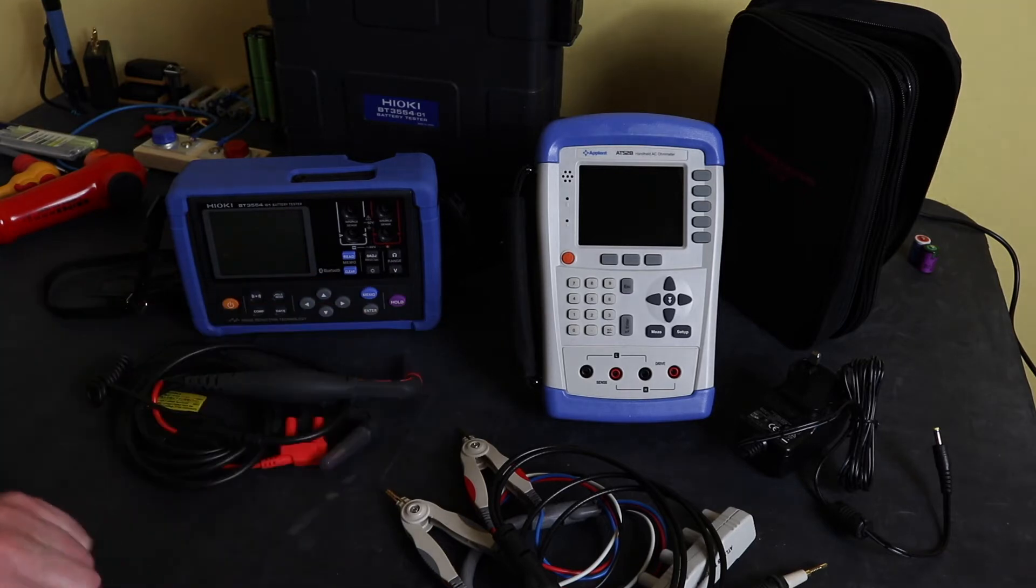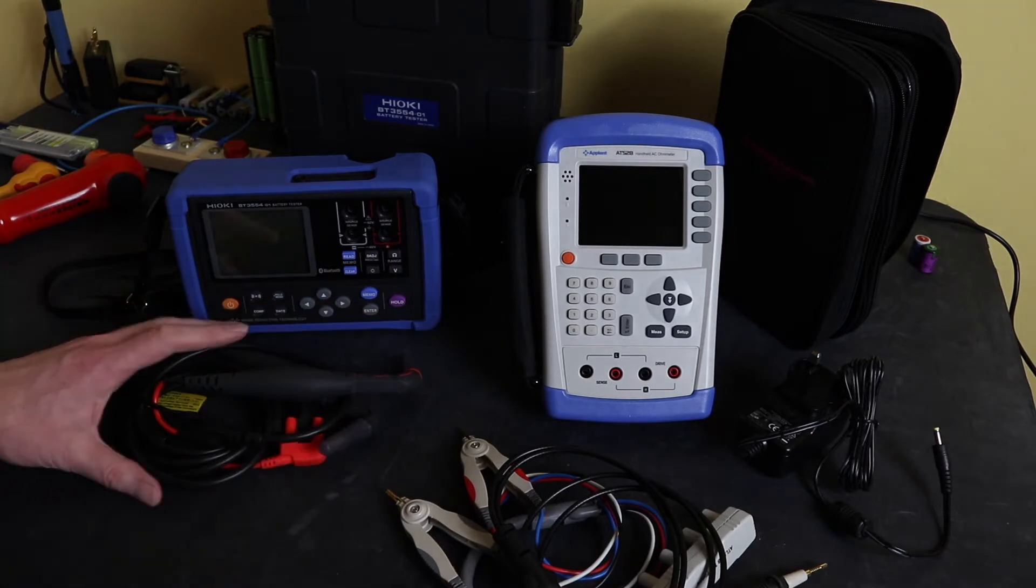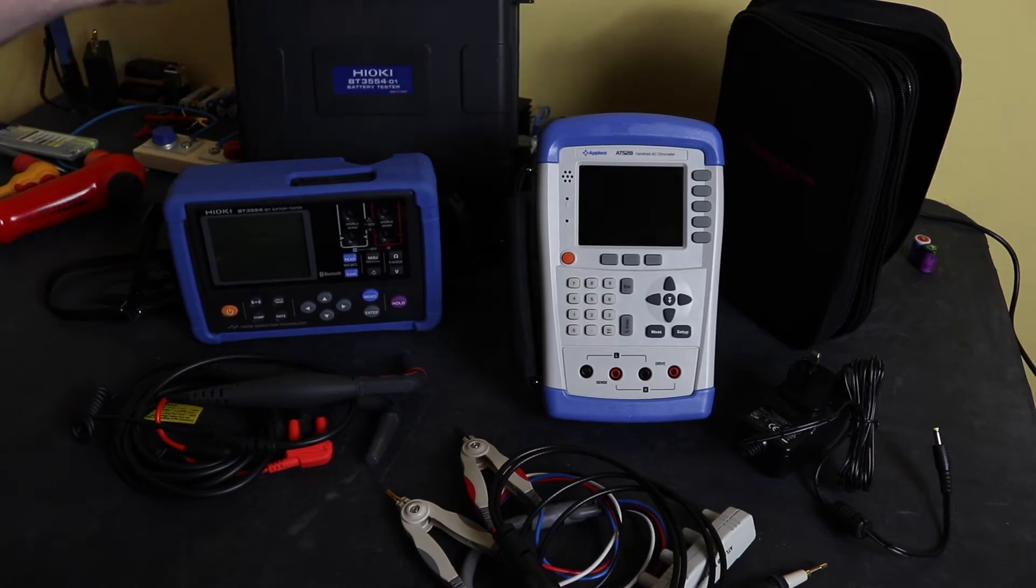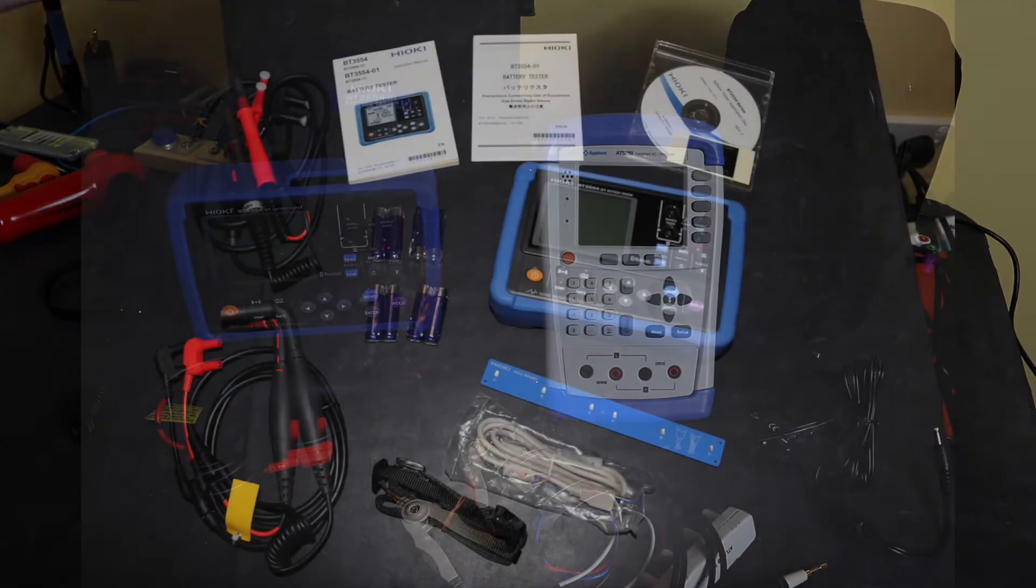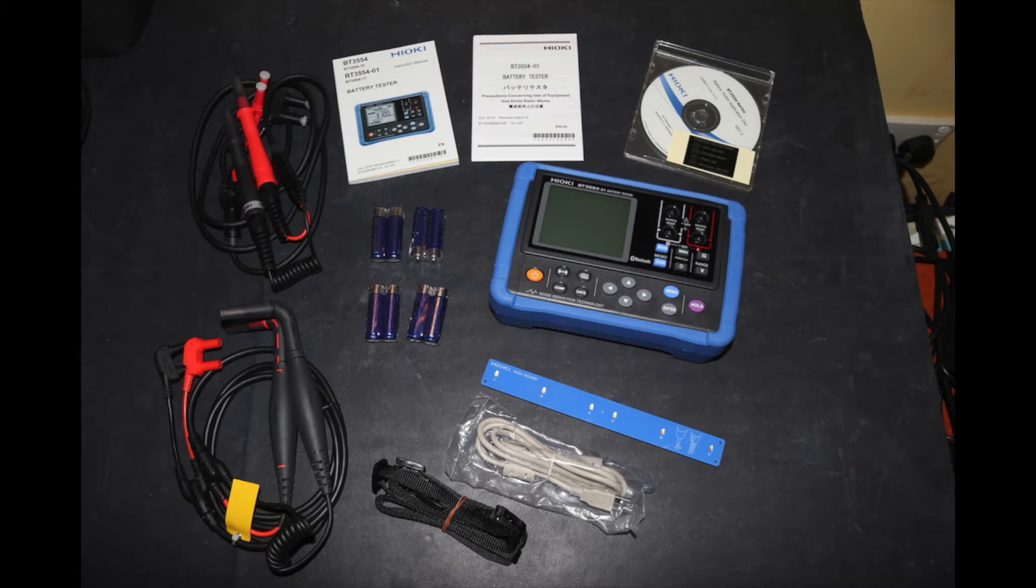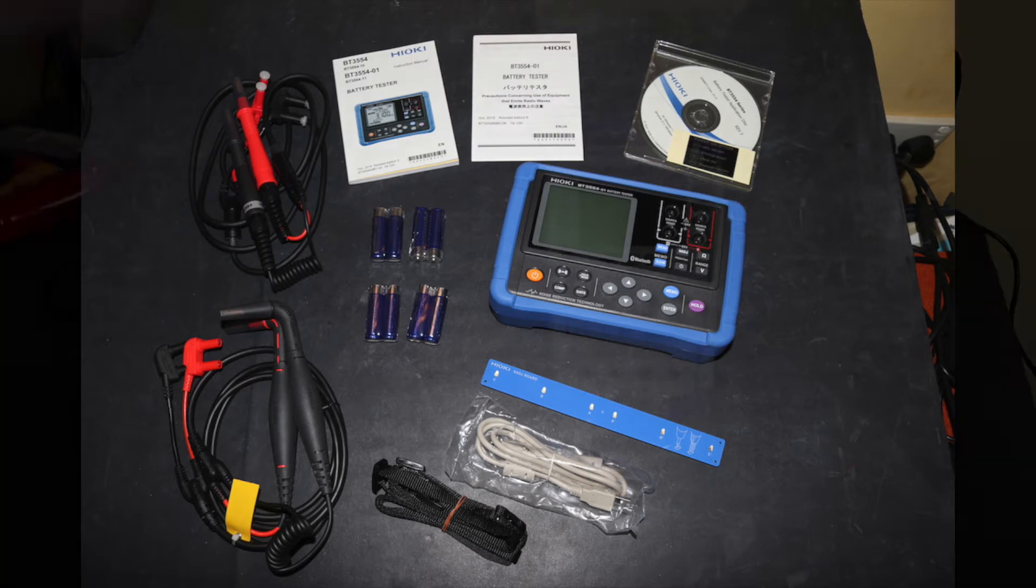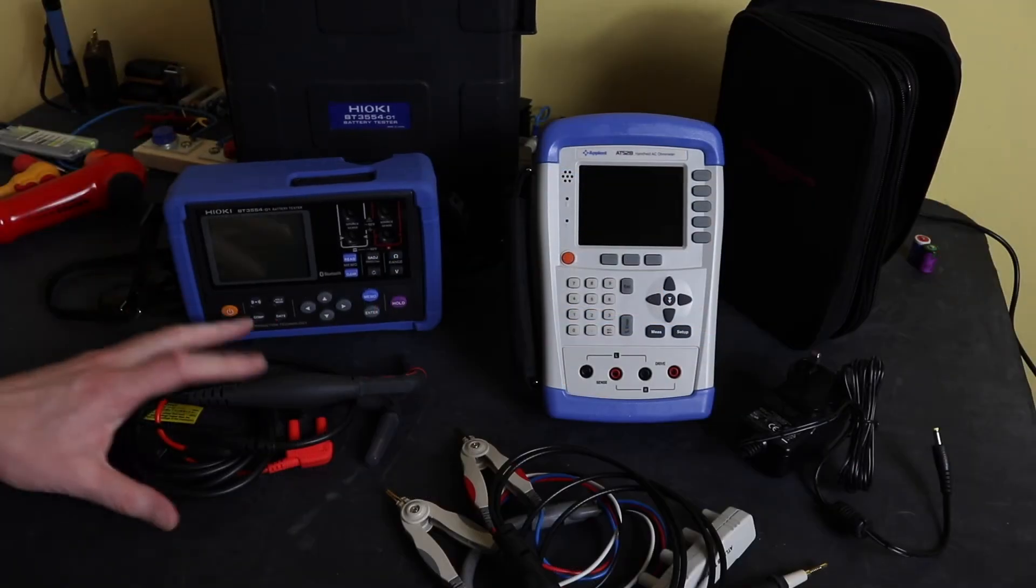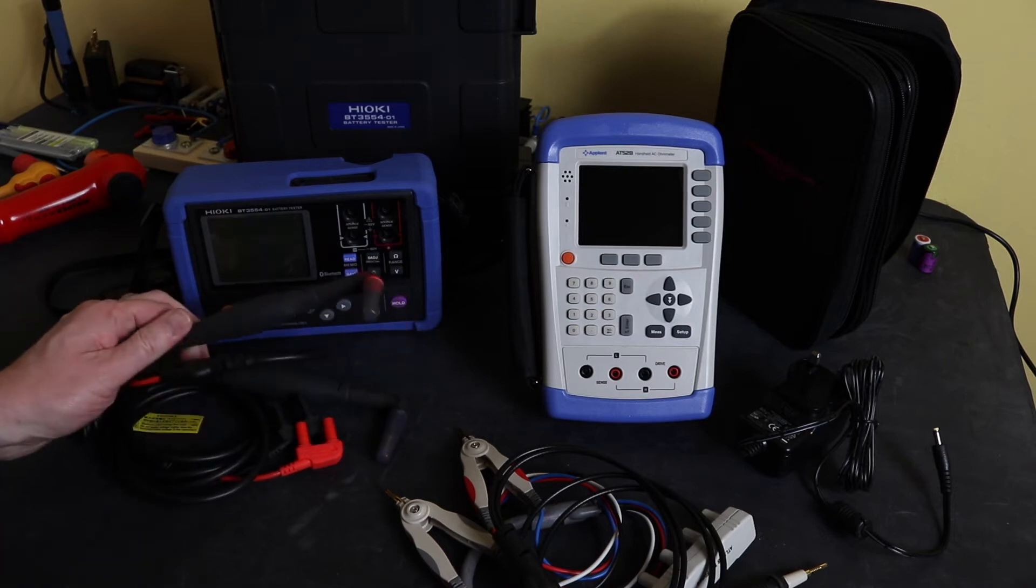The Hioki comes in a hard case. You also get a zero ohms adjust board in there and one set of probes and the USB comms lead. This also has enough space for a second set of leads, which is the right angled probe tips that I've got here, but you have to buy them as extras.